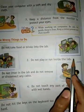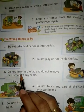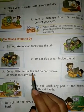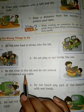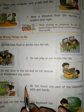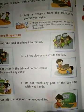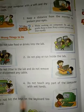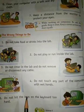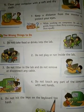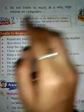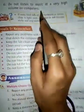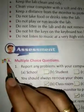The wrong things to do: one, do not take foods or drinks into the lab. Two, do not play or run inside the lab. Three, do not litter in the lab and do not remove or disconnect any cable. Four, do not touch any part of the computer with wet hands. Five, do not hit the keys on the keyboard too hard. Six, do not listen to music at a very high volume on the computer.